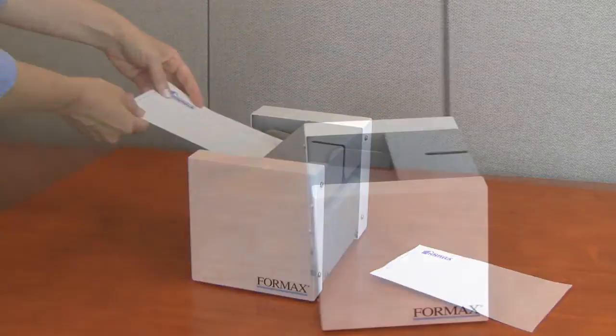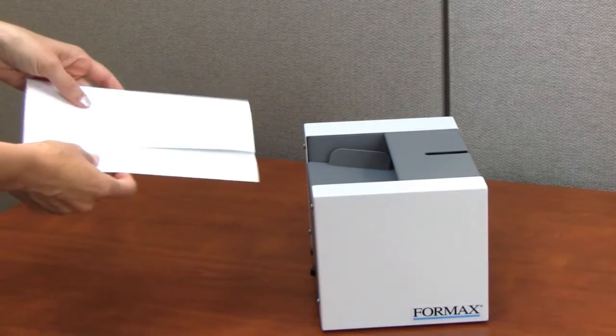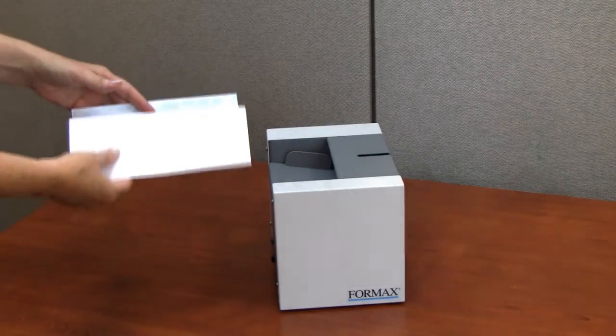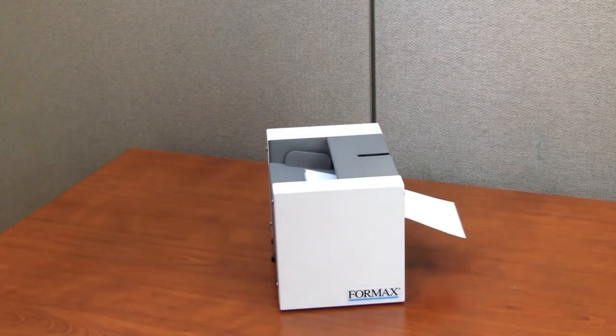The FD1000 can accommodate a wide variety of pressure seal forms, with a folded size of up to 5.5 inches wide, processing up to 24 pre-folded forms per minute. Proudly built in the USA with proven Formax technology.